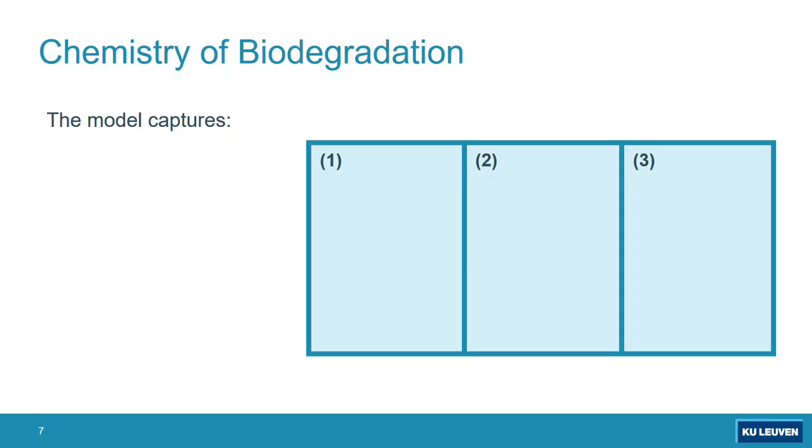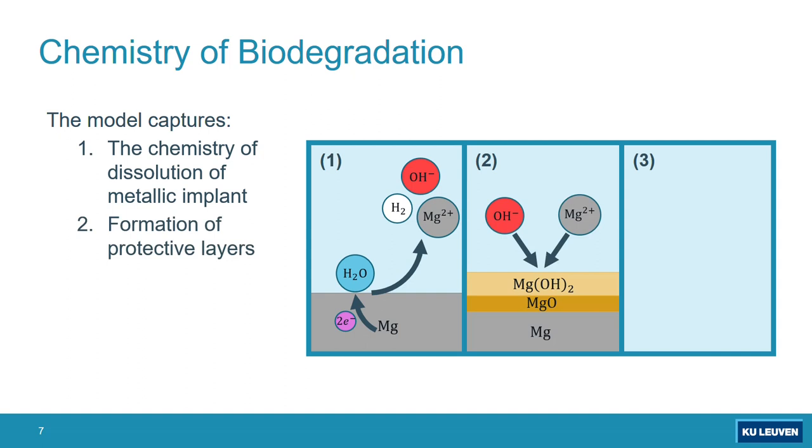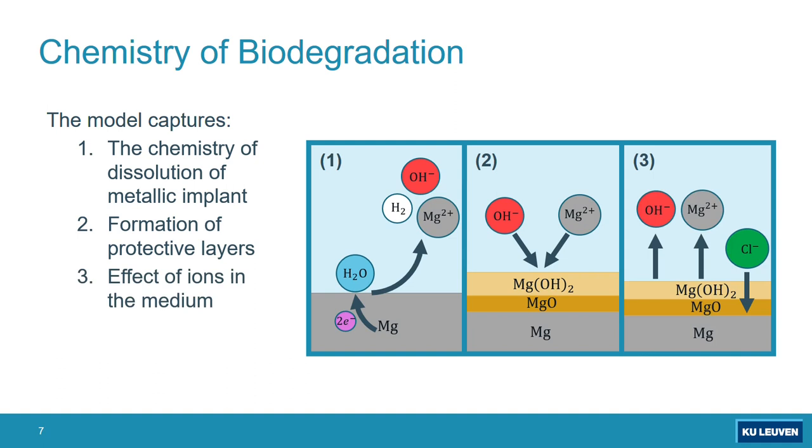The chemistry of biodegradation can be complex depending on the electrolyte and environment, but in the most basic form the model should capture these basic steps: the dissolution of the underlying metal, in this case magnesium, then formation of some protective layers on top of it that can be a complex environment depending on the electrolyte, then the effect of the environment and different ions in the electrolyte on this protective layer, and also change of various side effects that we usually use, for example pH, that we usually use for validating the models.